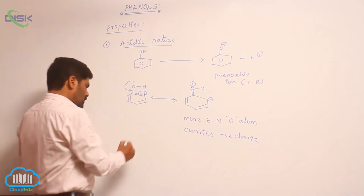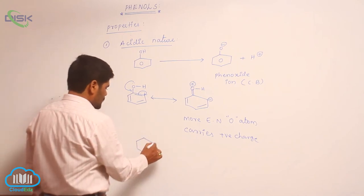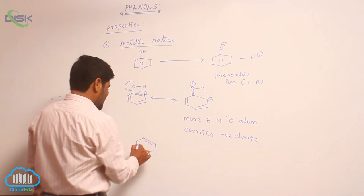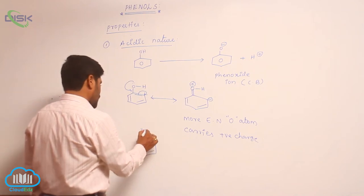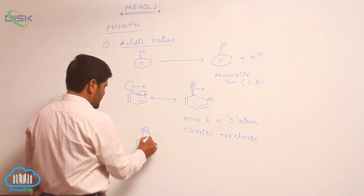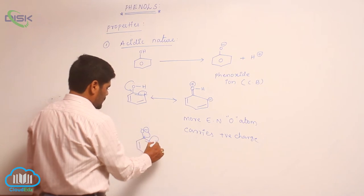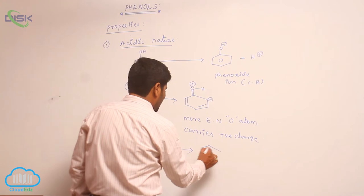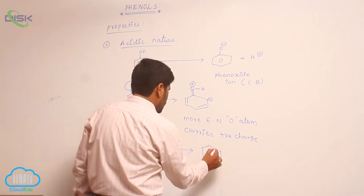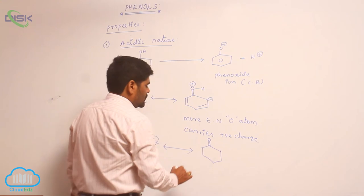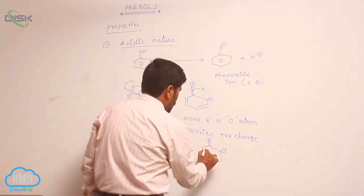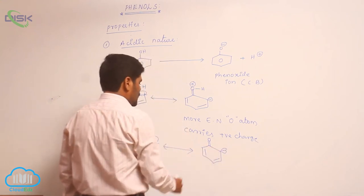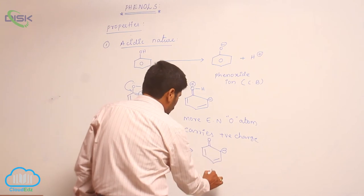Come into the phenoxide resonance structures. Phenoxide resonance structures. Here is O minus. In these resonance structures, oxygen is neutral. So, that is the reason why this one is more stable.